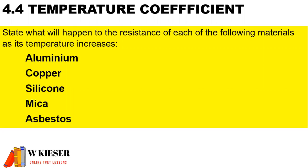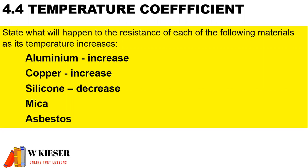As temperature rises, we find that resistance for aluminium will increase, for copper resistance will increase, for silicon it will decrease, for mica it will decrease, and for asbestos it will decrease.